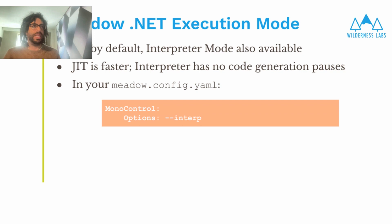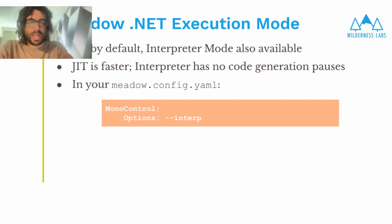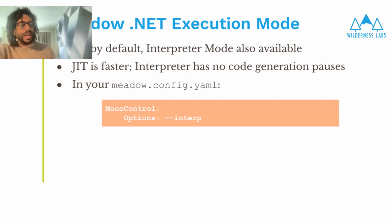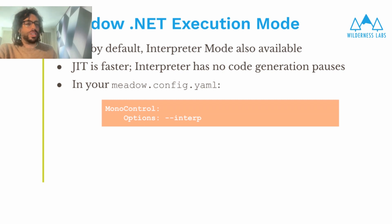Another thing we can do with Mono and the .NET runtime is that we support two execution modes: JIT (just-in-time) execution mode and interpreted mode. JIT mode is our best performing mode for general applications. How it works is that the first time your C-Sharp or F-Sharp method runs, it is compiled by Mono into native code — native code is generated, and from then on that native code is what's executed. Generating native code is faster than interpreted mode in almost all cases. However, the code generation is something worth considering: the first time you call a method, there is a code generation delay.